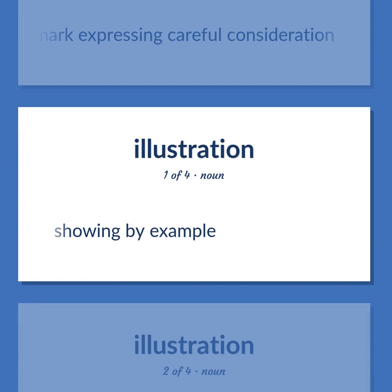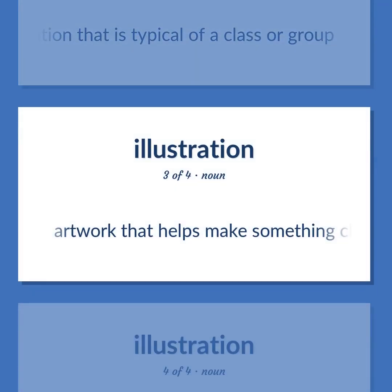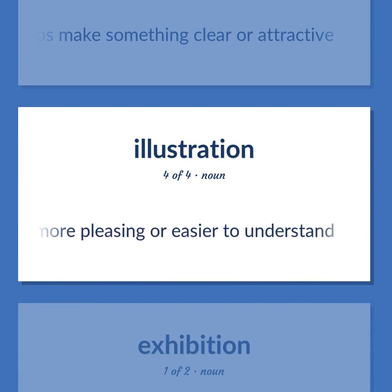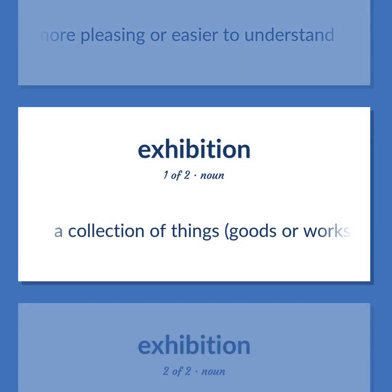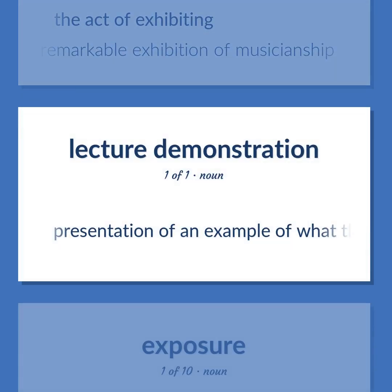Illustration/Exhibition: Showing by example. An item of information that is typical of a class or group. Artwork that helps make something clear or attractive. A visual representation — a picture or diagram — that makes some subject more pleasing or easier to understand. A collection of things, goods, or works of art, for public display. The act of exhibiting — a remarkable exhibition of musicianship. Presentation of an example of what the lecturer is discoursing about.